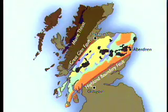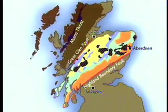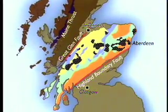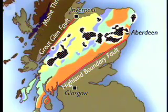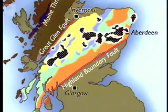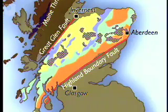Late Precambrian rocks between Scotland's giant crustal fractures — the Great Glen and the Highland Boundary faults — consist of Dalradian sedimentary sequences laid down in basins as Rodinia rifted apart. Younger masses of granitic intrusions, shown here in grey, punctured them 400 million years ago.